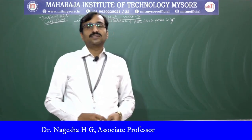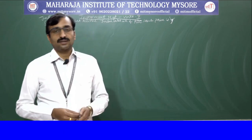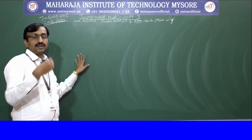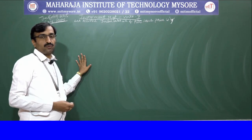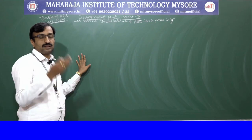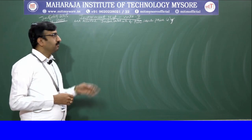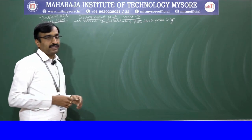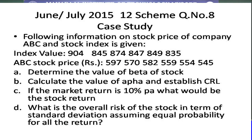Hello everyone. This is a continuation of problems from Unit 5, that is problems on different types of portfolio. In the previous class we covered basic problems on beta calculations. Moving on, if you take the question paper from June/July 2015 — that is 12 MBA FM 322, 12 KIM question paper — it is a case study problem.